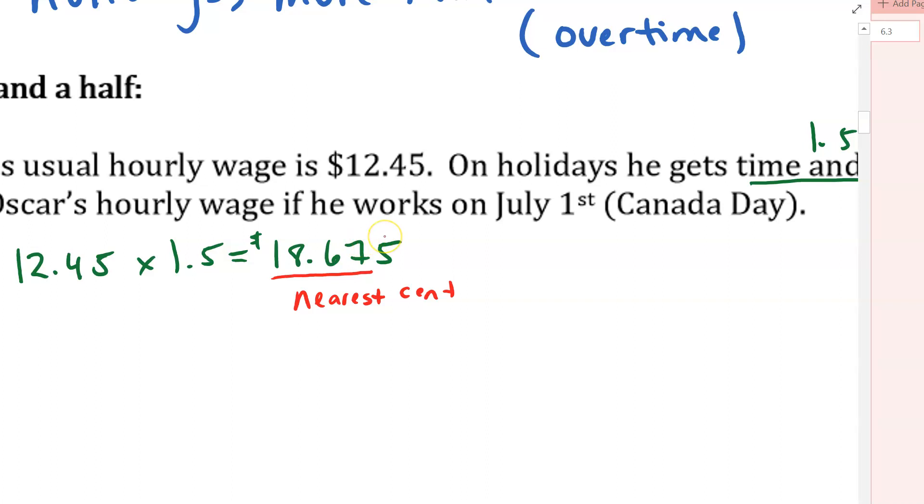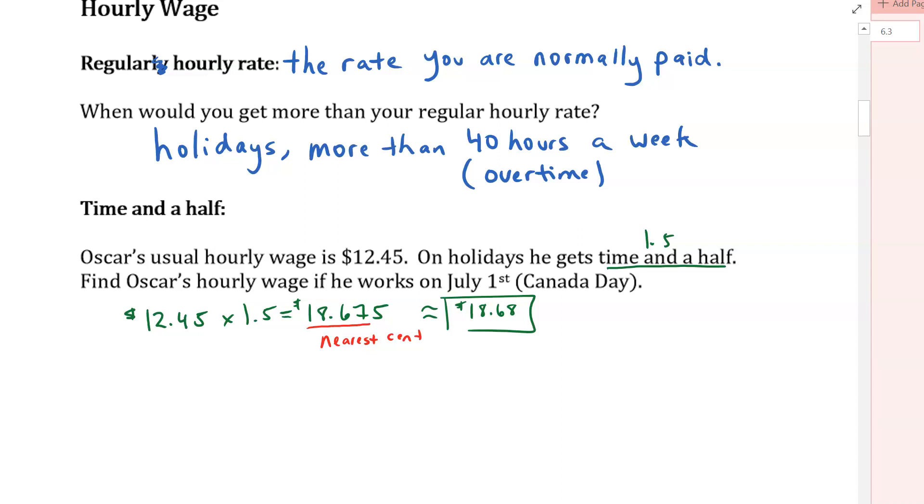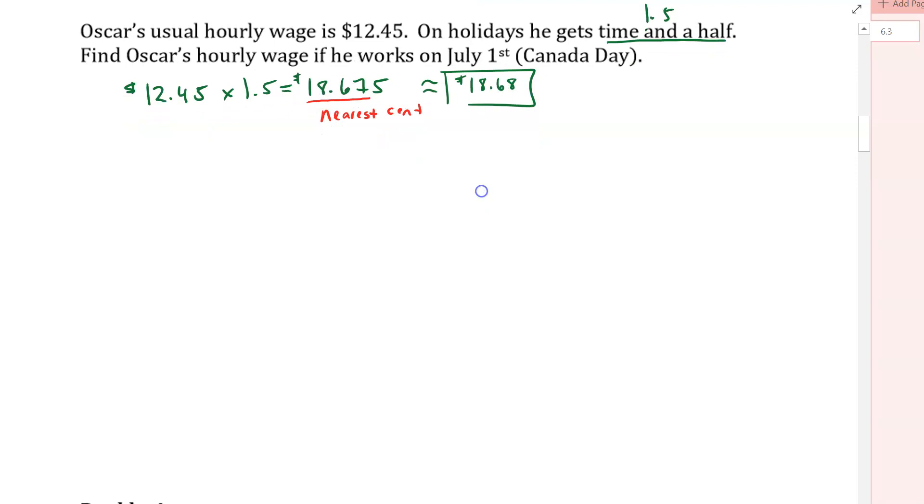And you remember what the rule is. If the next digit over is 5 or greater, then we go higher. So in this case, we're going to say that turns into $18.68. So there's our answer there. Is that all we have to do? Find the hourly wage. Okay, so the hourly wage that he's going to get for that Canada Day is $18.68.